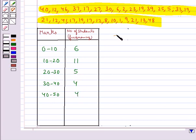In the interval 0 to 10, we include 0 but exclude 10. That is, the number of students, which is 6, are those students who have obtained marks from 0 to 9. The student who got 10 marks will not be included in this class interval.